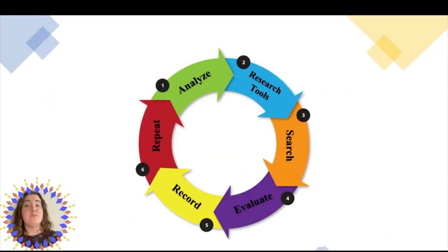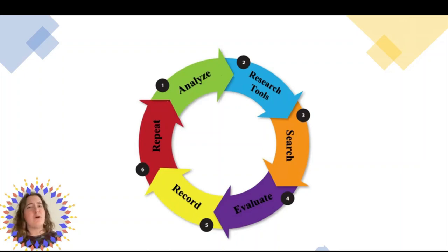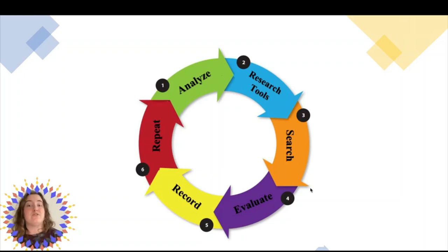Now you may find that you do this research process several times before finding something you're interested in researching more, or maybe you're interested in creating a research question for your paper. Don't worry — research is supposed to be like this. Research is what we call an iterative process and it's normal to circle back to where you were before. You can see this diagram of the research process is a circle; by nature, the research process is in fact circular. Exploratory research helps you narrow your focus and figure out what you really want to spend time researching before you commit.